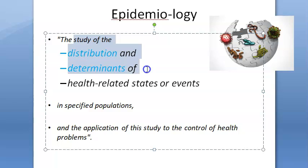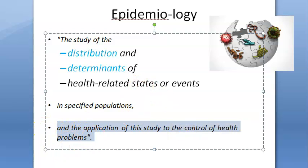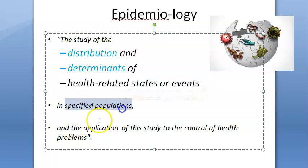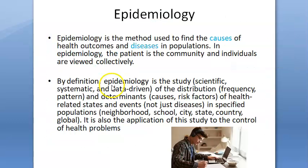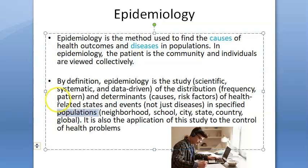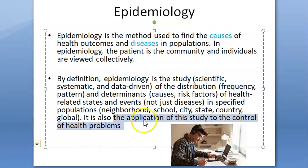Recap: The definition of epidemiology is the study of the distribution and determinants of health-related states or events in a specified population, and applying the study for the control of health problems. It is a scientific, systematic, data-driven study. Distribution means frequency and patterns. Determinants means causes and risk factors. Population can be a neighborhood, school, city, state, country, or the whole world.